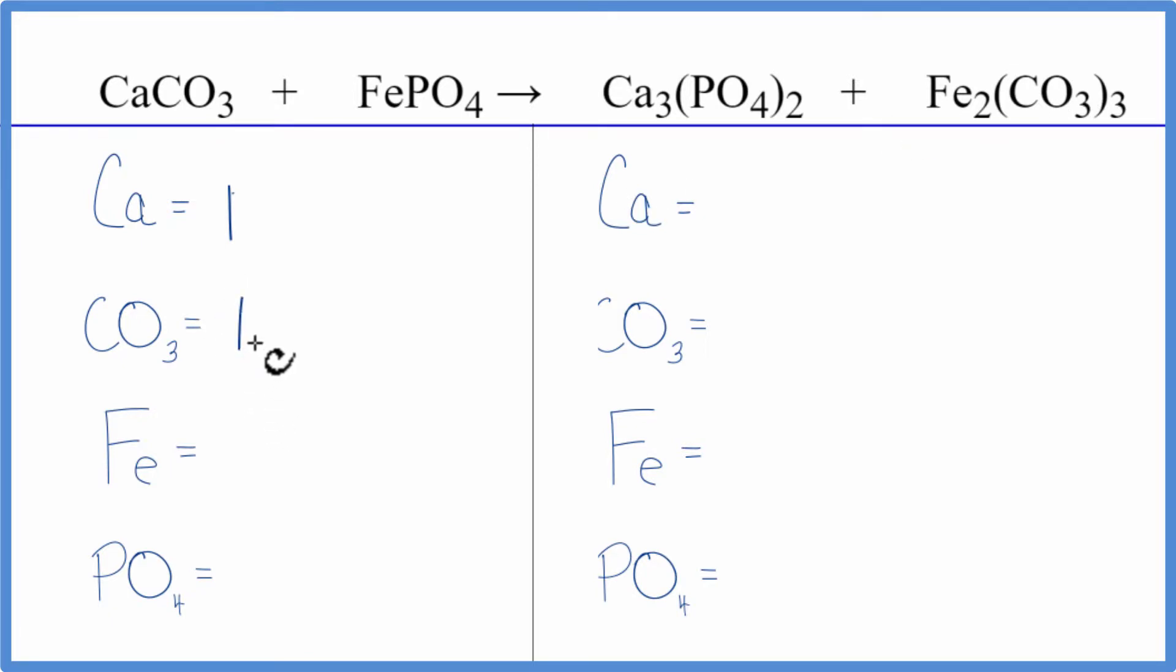I have one iron, and then PO4, that's the phosphate ion. I have a PO4 here, and that's again right here. It stays together in the chemical reaction. I'm just going to say I have one of those, one PO4, one phosphate ion.